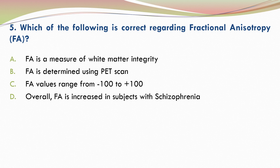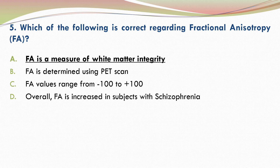The correct answer is A — fractional anisotropy is a measure of white matter integrity.